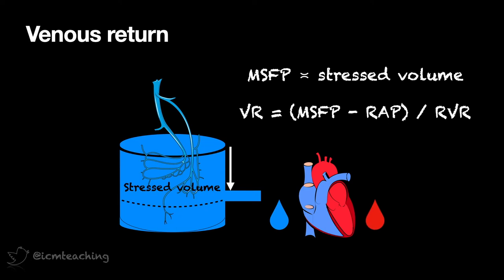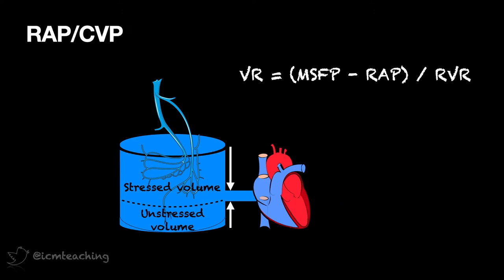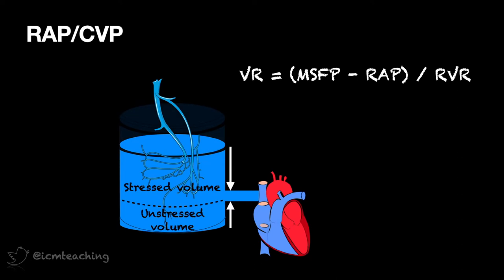The amount of blood in the veins not exerting a pressure effect is like the volume in the tank below the outlet, or the amount of air in a tyre not pressing on its walls. This does not contribute to flow out of the tank. We call this unstressed volume, and it does not contribute to mean systemic filling pressure. So what's the relevance of all this? You can easily appreciate that the lower the right atrial pressure, and the higher the mean systemic filling pressure, the better the venous return. And this can be conceptualised by lowering the heart, or increasing the stressed volume.